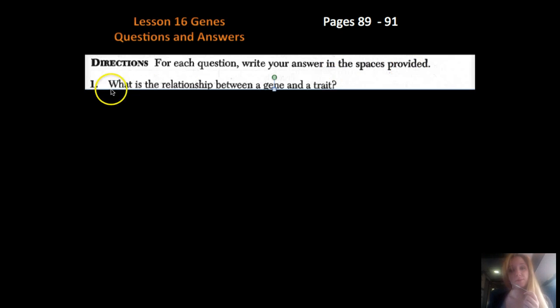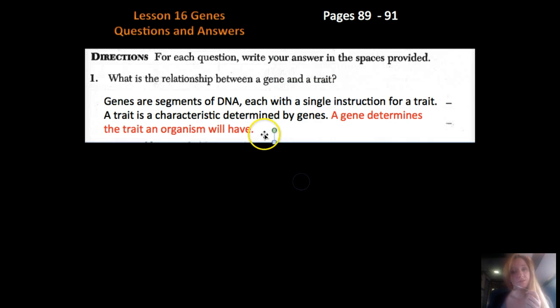Directions: For each question, write your answer in the spaces provided. Number one: What is the relationship between a gene and a trait? We learned from our reading that genes are segments of DNA, each with a single instruction for a trait. A trait is a characteristic that's determined by genes. So, a gene determines a trait an organism will have.